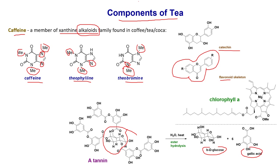You have all sorts of alkaloids, catechin, flavonoid, chlorophyll, glucose, and gallic acid in tea. How do we separate all of these? How do we isolate caffeine? Let's look at that in detail.